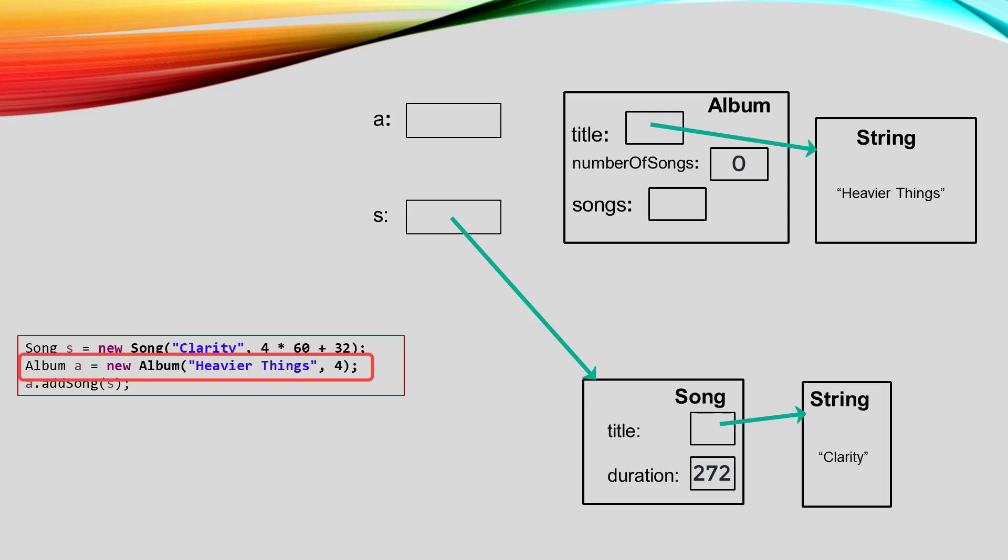Album will have three instance variables: title, which is just like the zillion titles we've already built; number of songs, which is an int that holds the number of songs the album is currently holding; and songs, which is an array that will hold the songs in the album. Our album constructor is going to allocate space for that array so that the album is ready to hold songs.